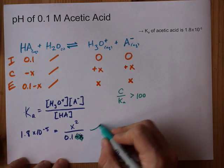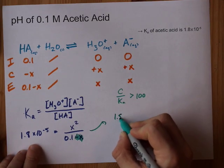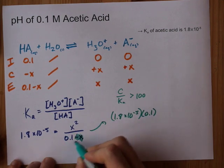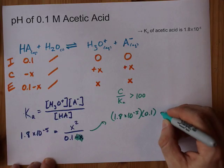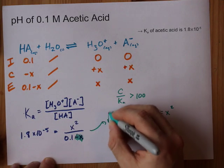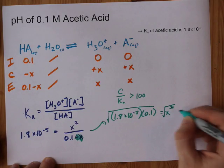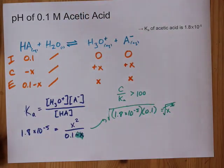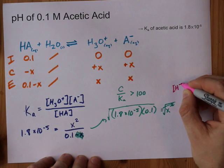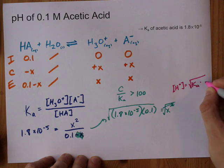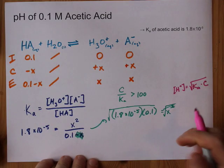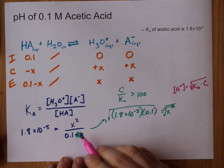That means we can solve this an easier way. We have 1.8 times 10 to the negative 5 on the left, multiplied by 0.1, equals X squared. Then to get X, the equilibrium concentration, you square root both sides. Your teacher may also have taught you the shortcut formula that the H+ concentration equals the square root of Ka times C, the initial concentration — you can see how these two relate to each other. It assumes your concentration is high enough relative to Ka to make this assumption.